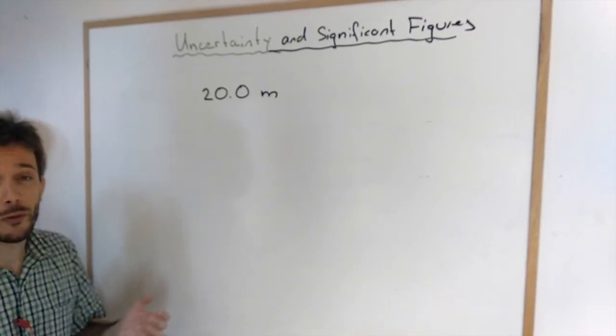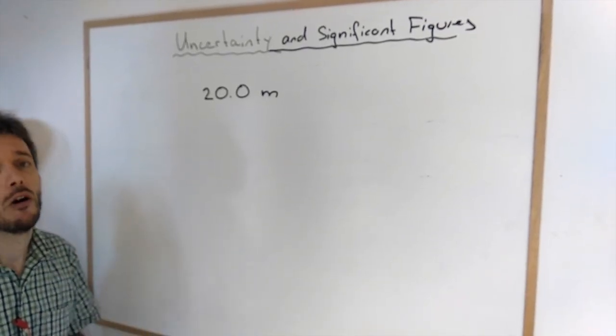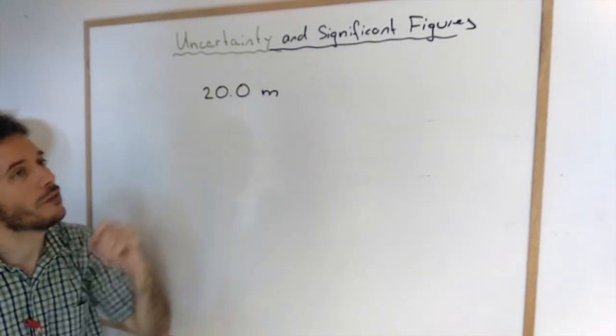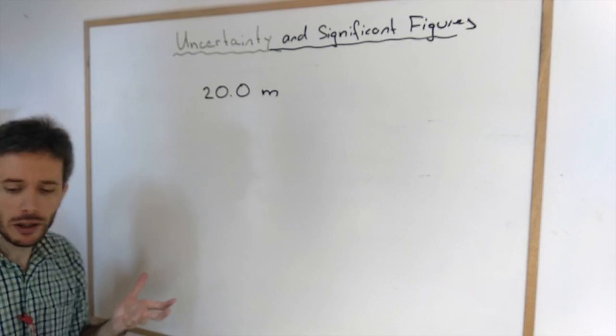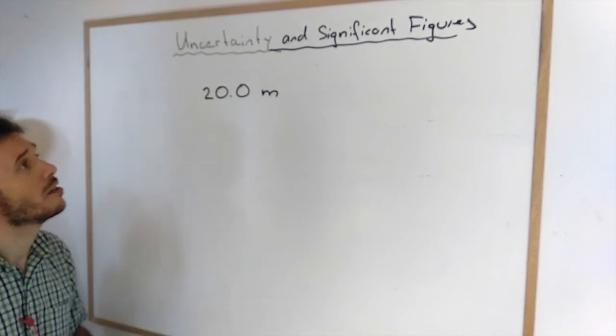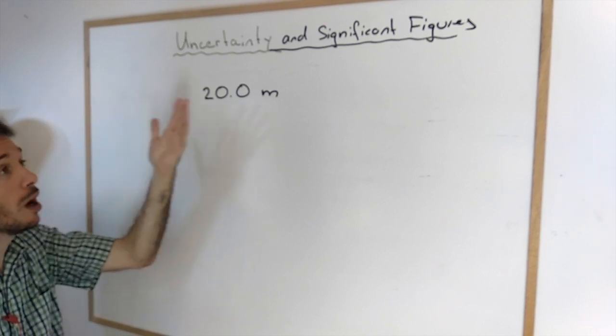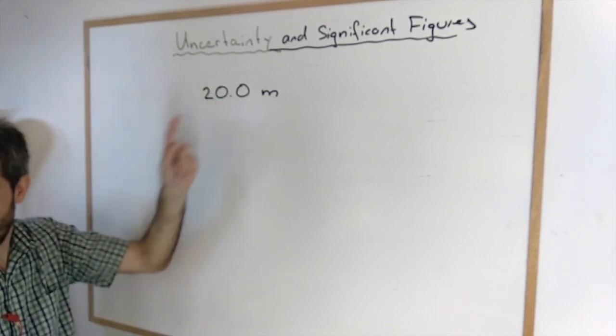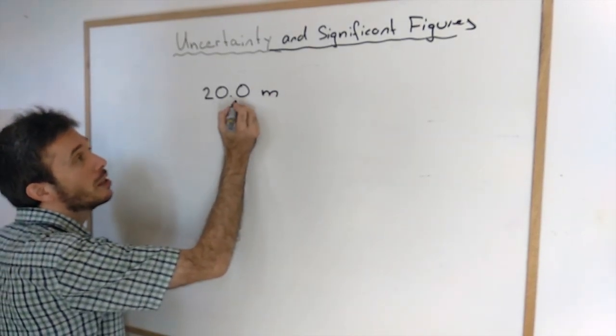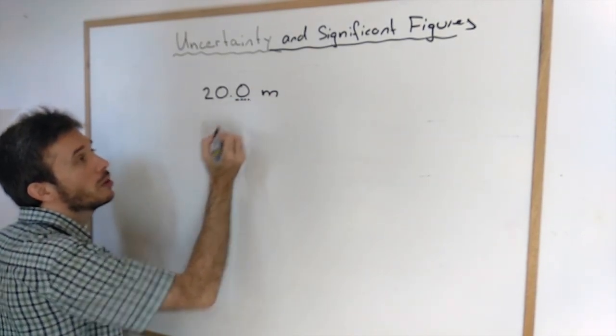And you're probably already familiar with another way of specifying how uncertain you are about your measurement, which is using significant figures. Mostly you use significant figures in chemistry classes or in physical science. You should have seen this concept. Now what does it mean? For example, if you write 20.0, what you're saying by using significant figures is that you're not certain about this.